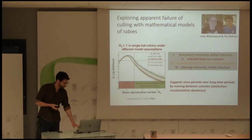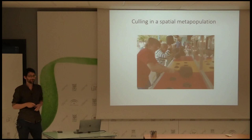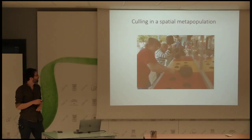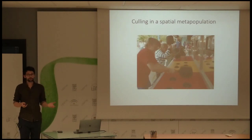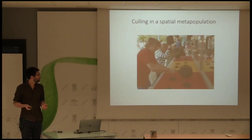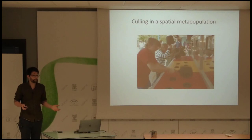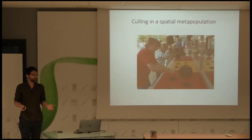This implies that the only way for rabies to really be persisting over long time periods is for the virus to be using multiple bat colonies — any single colony can't maintain the virus indefinitely. That really points to the possibility that rabies is persisting over long time periods by extinction-recolonization dynamics, or metapopulation dynamics. The moment we understand that, it raises questions about how culling could work — it's analogous to whack-a-mole, where we always lag behind the epidemiological dynamics.